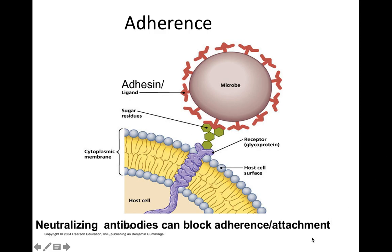We always want to think about how we could prevent this. Remember those neutralizing antibodies — neutralizing meaning they're going to block attachment. If the host has neutralizing antibodies that bind to the adhesins of the microbe, the adhesins can't bind to the host cell surface receptors. Blocking attachment is a powerful way to prevent infection — you block step one in the disease-causing process. Neutralizing antibodies can be produced by our immune system through a natural infection or triggered through vaccination.